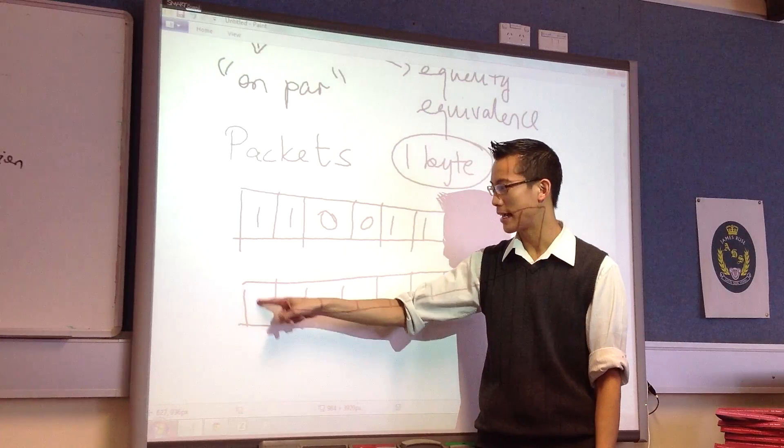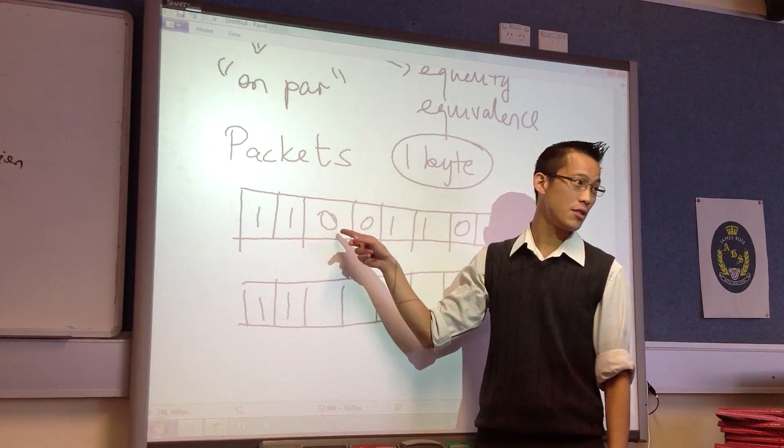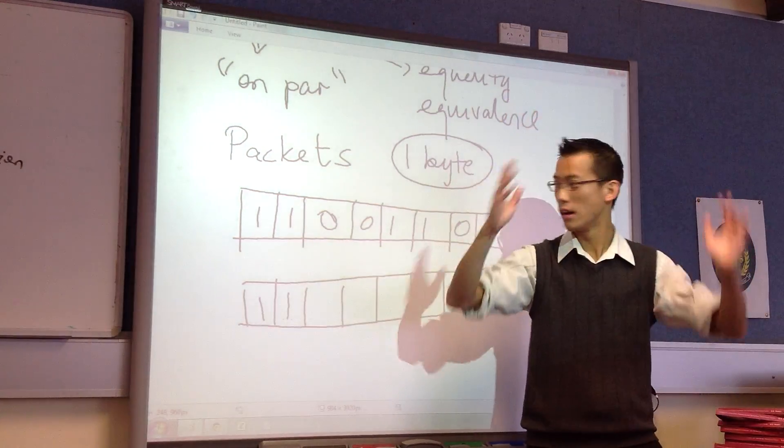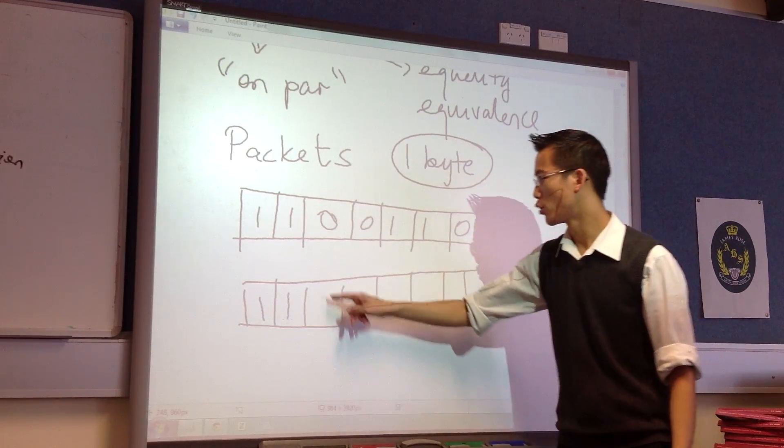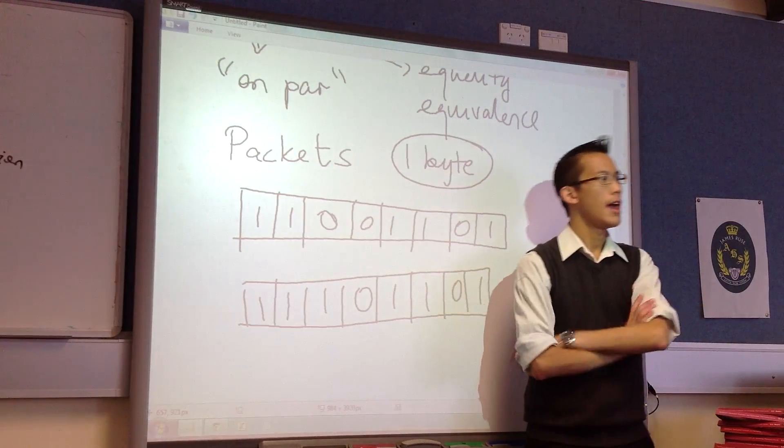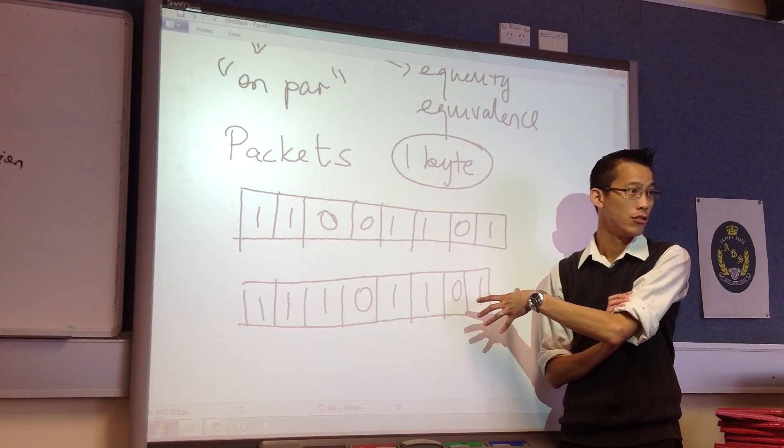But this zero here, suppose some interference came in and it was so strong that this part of the signal looked closer to a one than it did to a zero. So what might be received is this. Now the question for you is, how might we tell that this is what arrives at you? And what's the difference between these things?